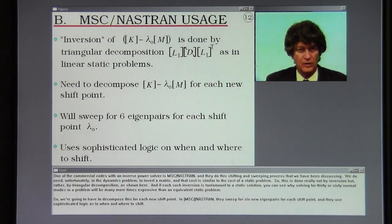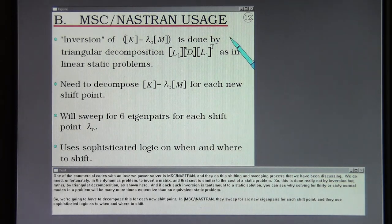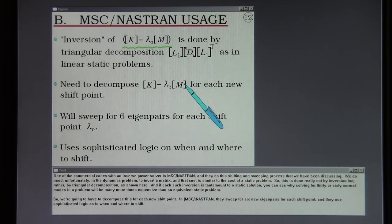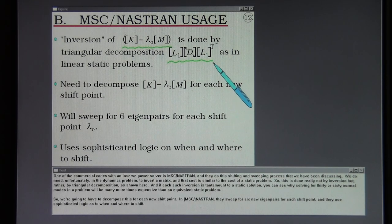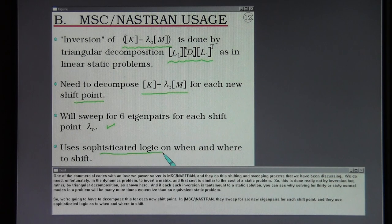One commercial code with an inverse power solver is MSC Nastran, which performs this shifting and sweeping process. Unfortunately the dynamics problem requires inverting a matrix, at a cost similar to a static problem — done by triangular decomposition rather than explicit inversion. Solving for 30 or 60 normal modes will therefore be many times more expensive than an equivalent static problem. In Nastran they sweep for six eigenpairs per shift point and use sophisticated logic for when and where to shift.